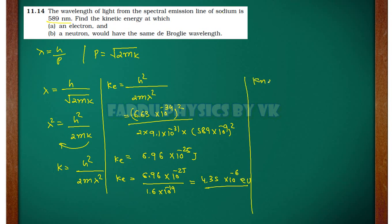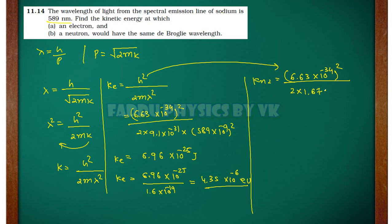Now for the neutron, it is the same formula. Put in the values directly: 6.63 × 10⁻³⁴ whole squared, divided by 2 times the neutron mass, 1.67 × 10⁻²⁷, into 589 × 10⁻⁹ squared. If you simplify this, you will get 3.79 × 10⁻²⁸ Joules.